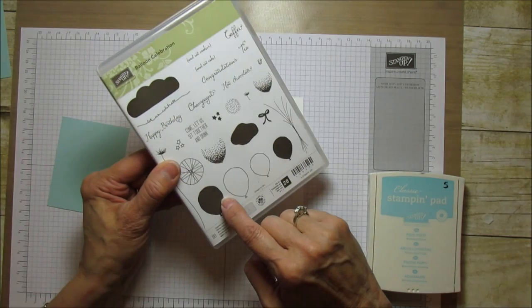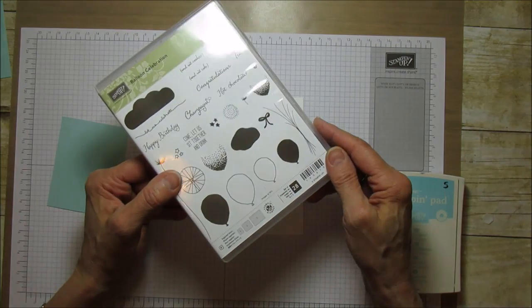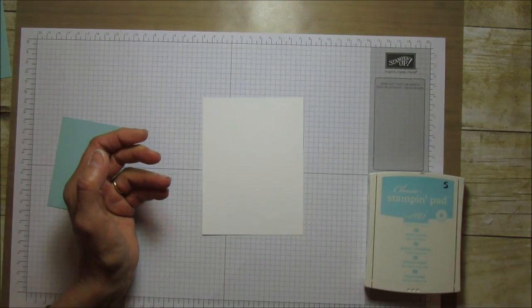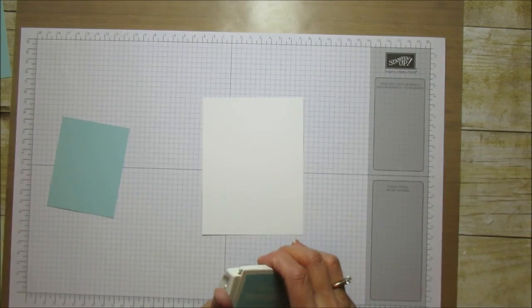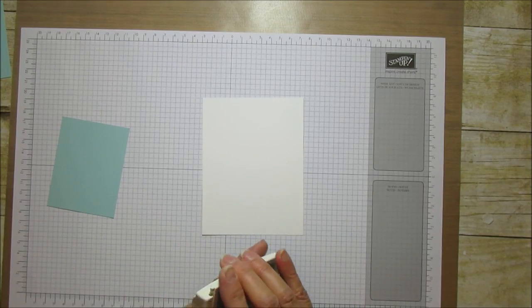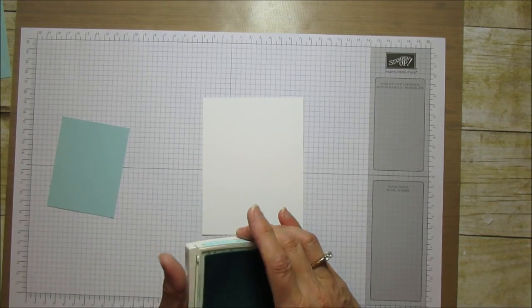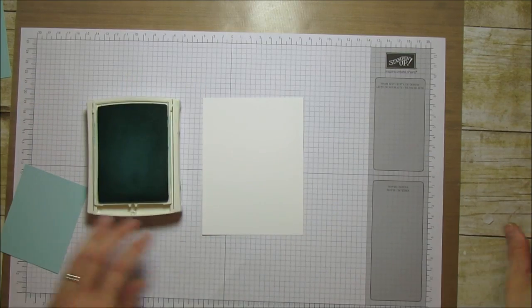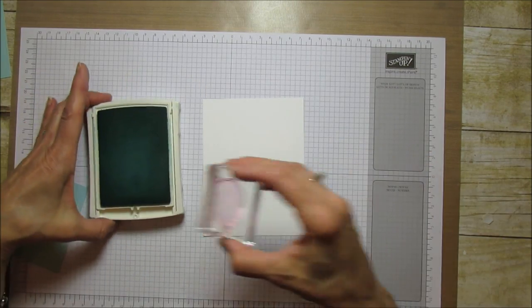We're using the larger balloon for this. This is a really great birthday stamp set. This paper - everything is Pool Party so it all coordinates together. How we're going to do this background - the first thing I'm going to do is ink up my balloon.